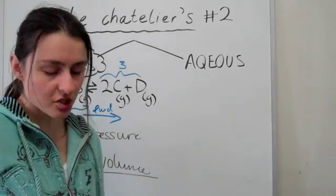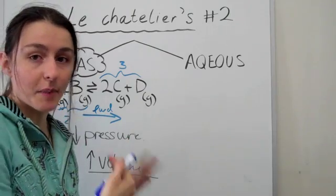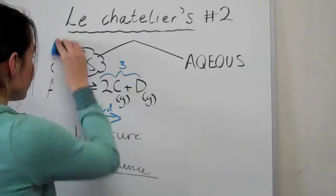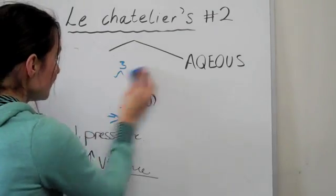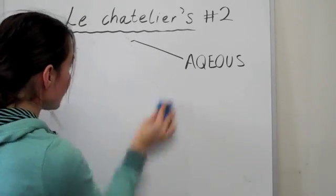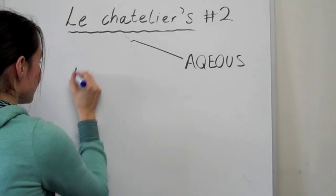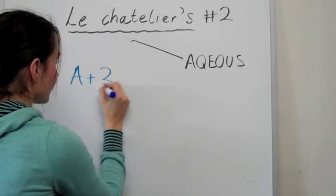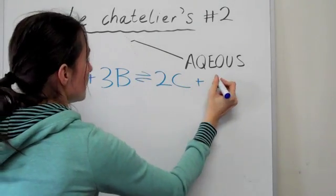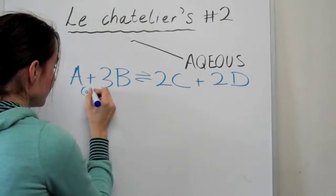Okay, so my suggestion to you is just to think about it from the perspective of particle distance. That's the easiest way for me to explain this. So, let's have a look at an aqueous system this time. Okay, so aqueous, if we have, I'm just going to make an equation up, 3B gives us 2C plus 2D. If all of these are aqueous,